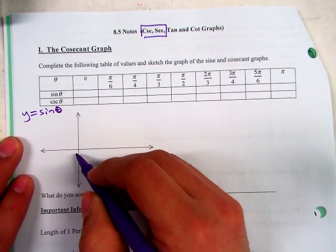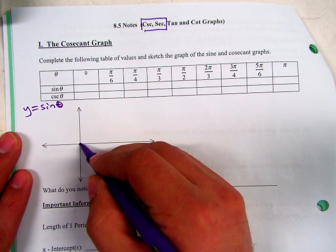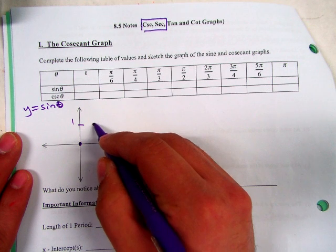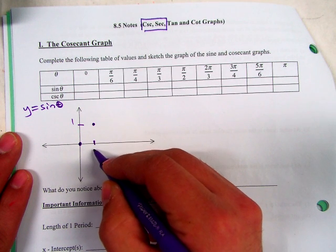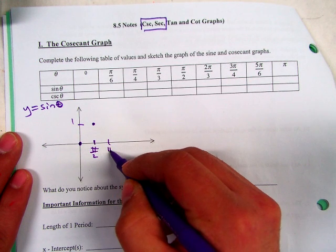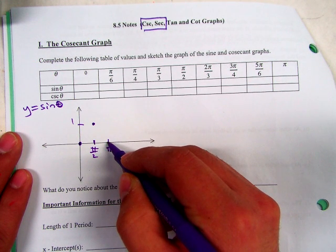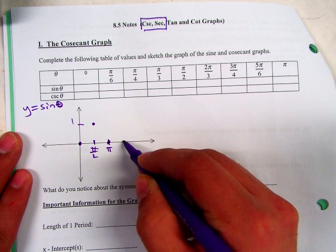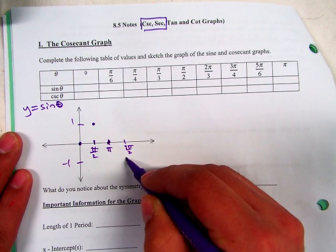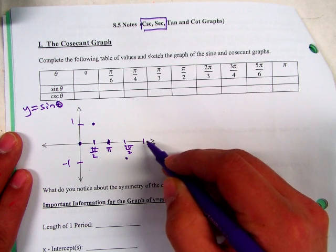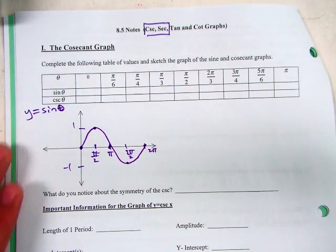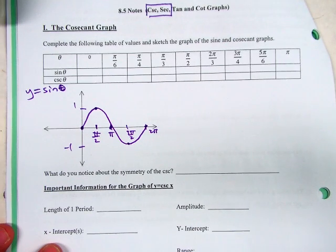Let's start with graphing y equals sine theta, just to review. Where does sine start? Zero. Zero. And then what does it do? Goes up to one. And what is the angle there? What's the input? Pi over two. And then at pi, it's zero.